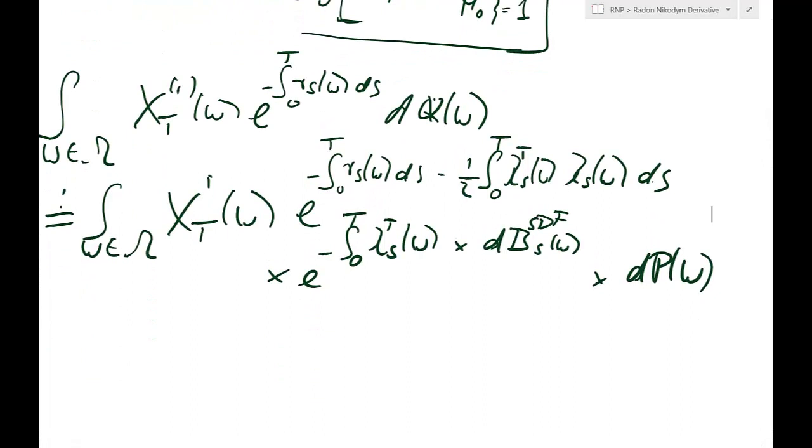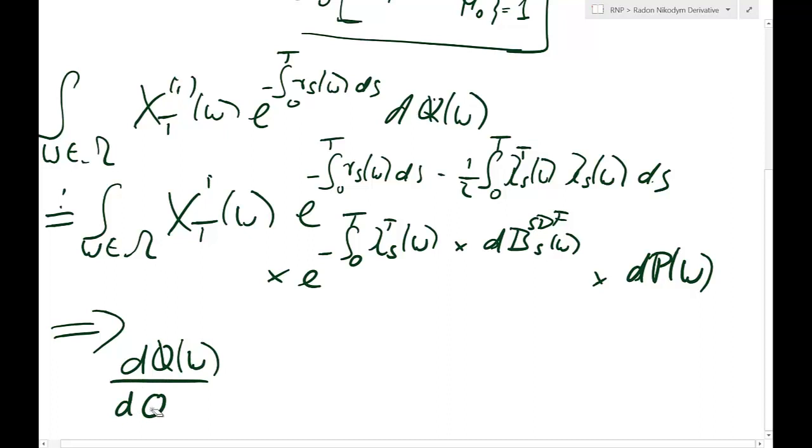So what now happens is that everything within the integral has to be the same. So we can cancel out that with that. So now we get a relationship between dQ and dP. That implies that the distance between the Q probability and the P probability, dQ over dP, is just equal to minus half of the exponential expression here.